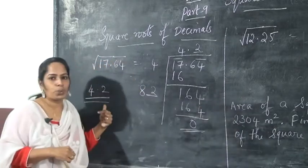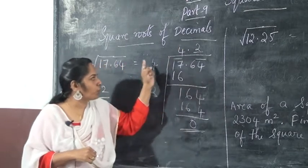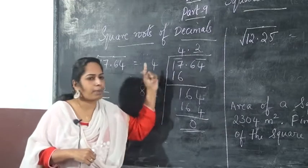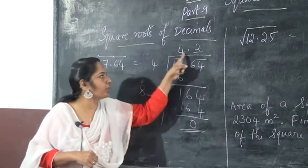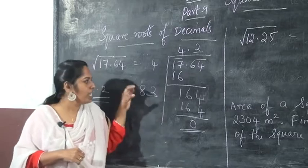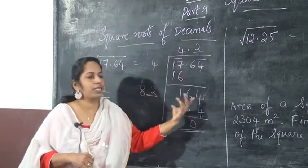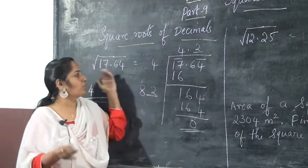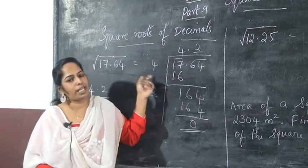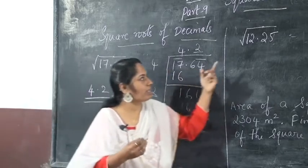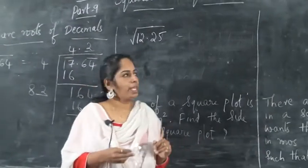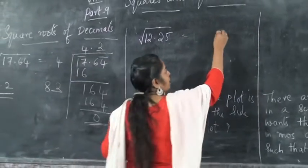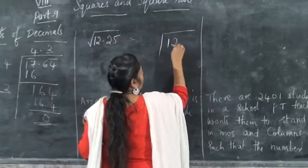The answer is 4.2, because the square root of 17.64 is 4.2. Hope you all understand how to find the square root of decimal values. So the next question is the square root of 12.25. Again, the square root of 12.25 — how will you find out the square root? Here again we want to write 12.25.